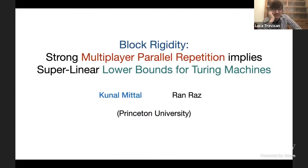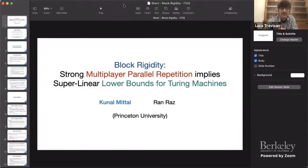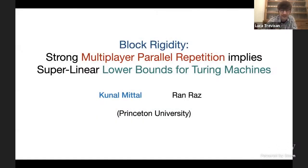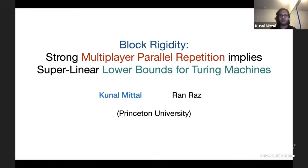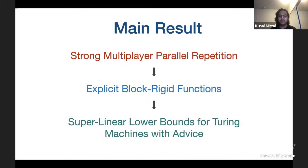Our next speaker will tell us about lower bounds for Turing machines derived from multiplayer parallel repetition. I'm going to be talking about block rigidity, multiplayer parallel repetition, and lower bounds for Turing machines. This is joint work with Ran Raz at Princeton University. Our main result is the following: we show that a strong multiplayer parallel repetition theorem will imply the existence of explicit block rigid functions, which will further imply super-linear lower bounds for Turing machines with advice.